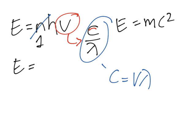So we now have E equals h times the speed of light over the wavelength. And we have this E here and this E here. They're both energy.